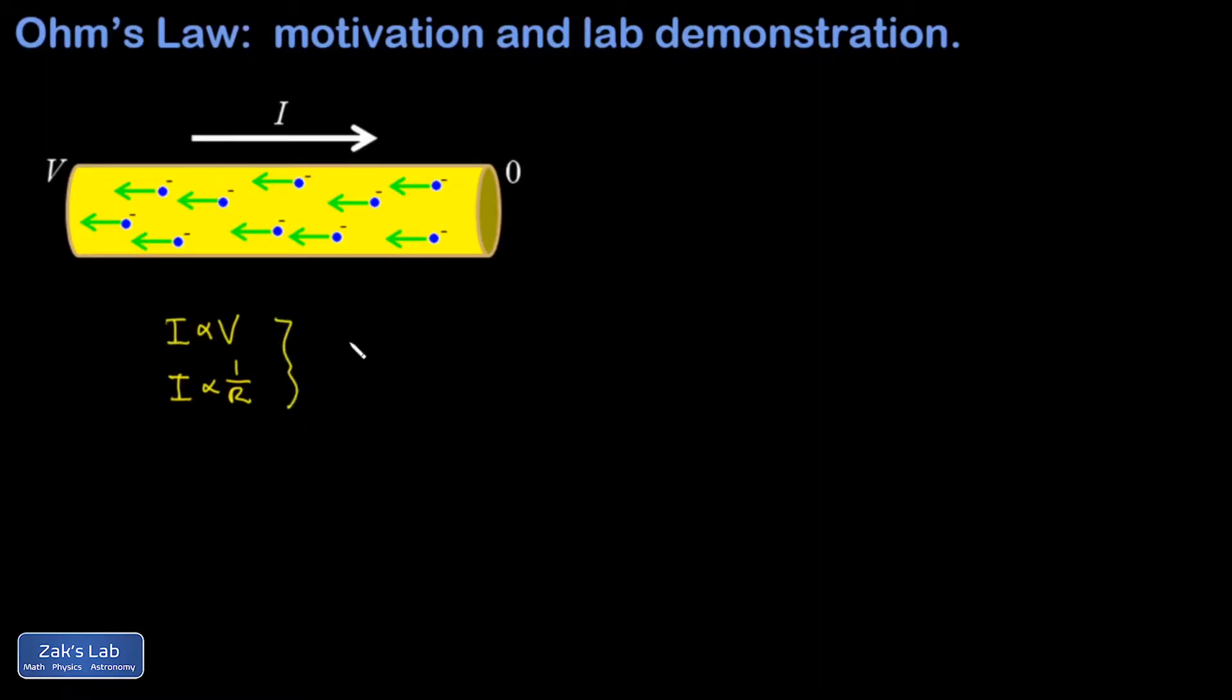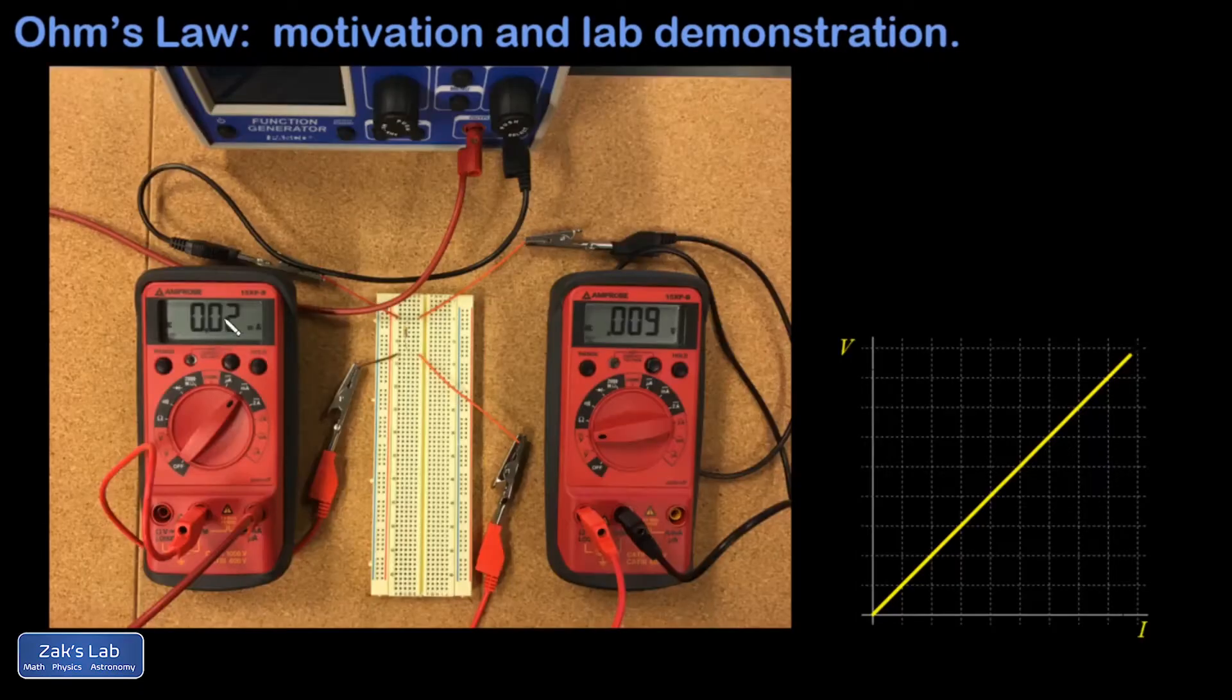Putting these two facts together we arrive at Ohm's law. The current is proportional to the voltage but inversely proportional to the resistance. You may be more familiar with this formula when it's solved for V: V equals IR.